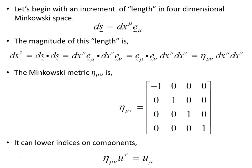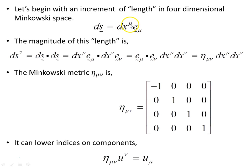Let's begin with an increment of length in 4-dimensional Minkowski space. Here's a little vector increment — it's the expansion of 4 elements, because Minkowski space is 4-dimensional. So mu is 0, 1, 2, and 3. The 0 component is the time component, and these are the basis vectors, giving us 4 terms in the expansion.